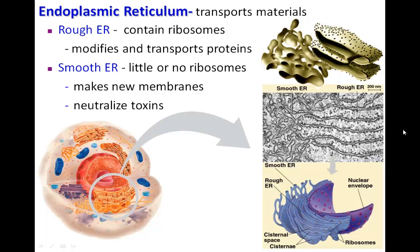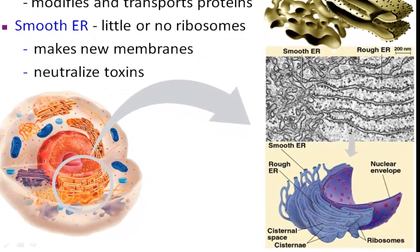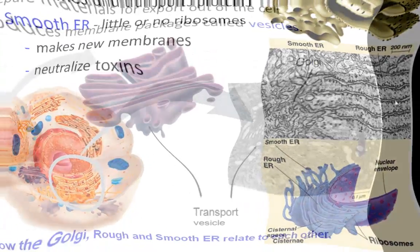We'll start with the rough endoplasmic reticulum. They contain ribosomes on the outside surface, so they literally look rough. They modify and transport any of the proteins the ribosomes would be sending. The smooth ER, however, doesn't have any ribosomes at all, so its entire function is related to generating new membranes for the cells, as well as a very interesting function of being able to neutralize toxins. Notice that in this case the rough and smooth ER are connected to each other.